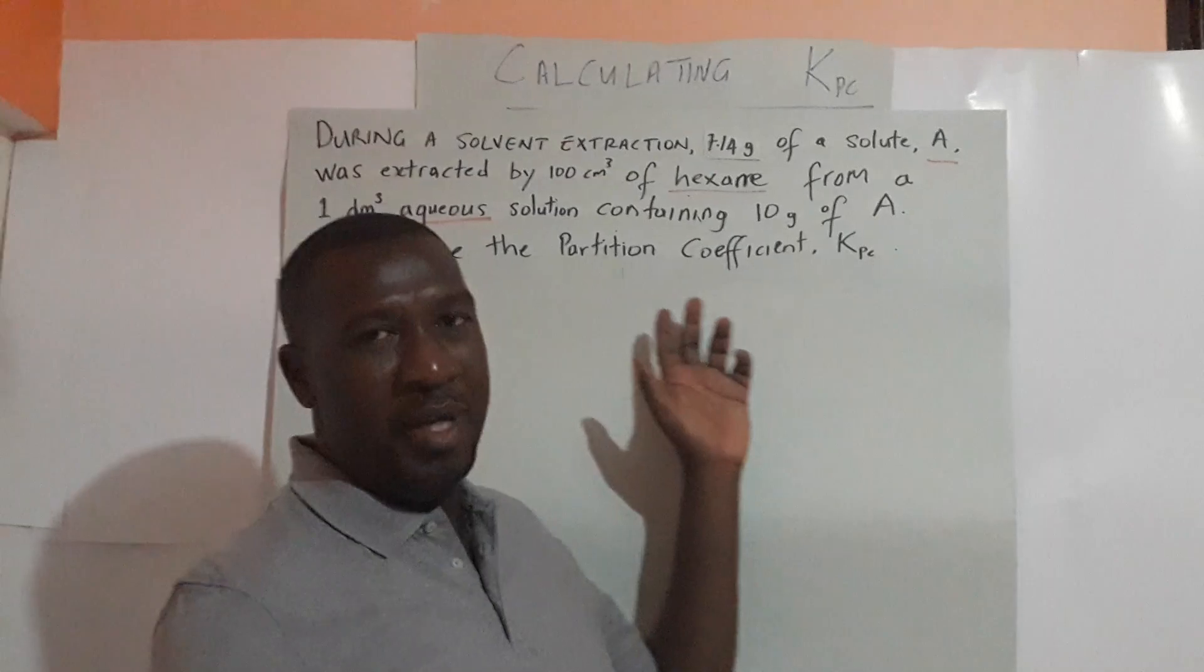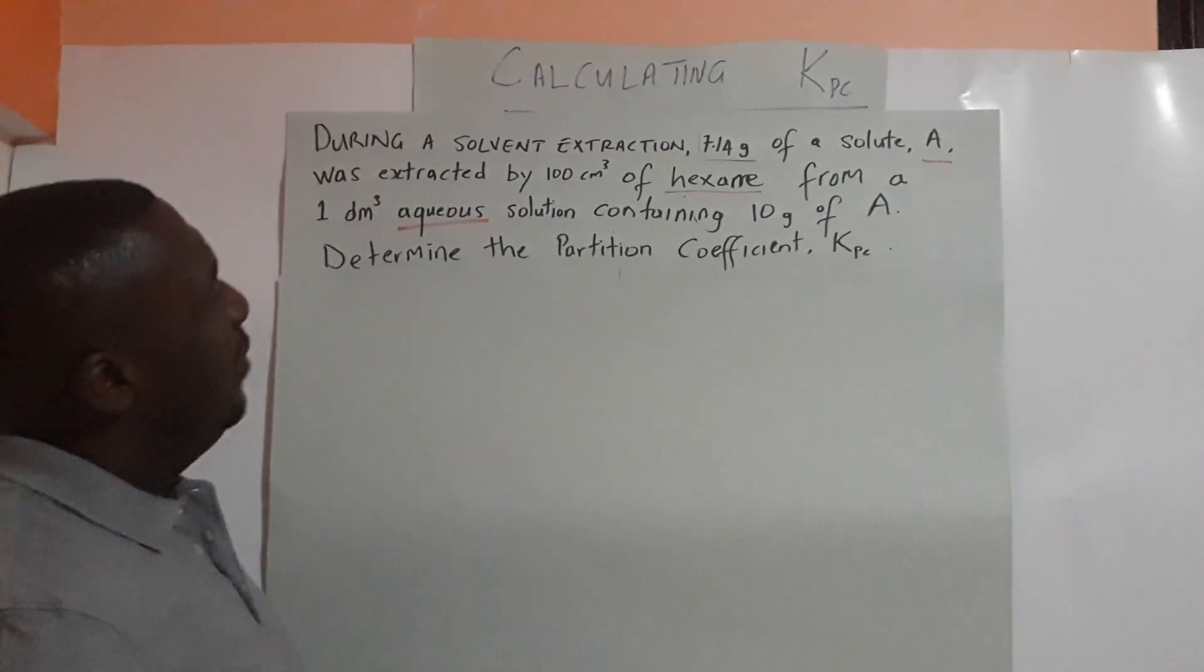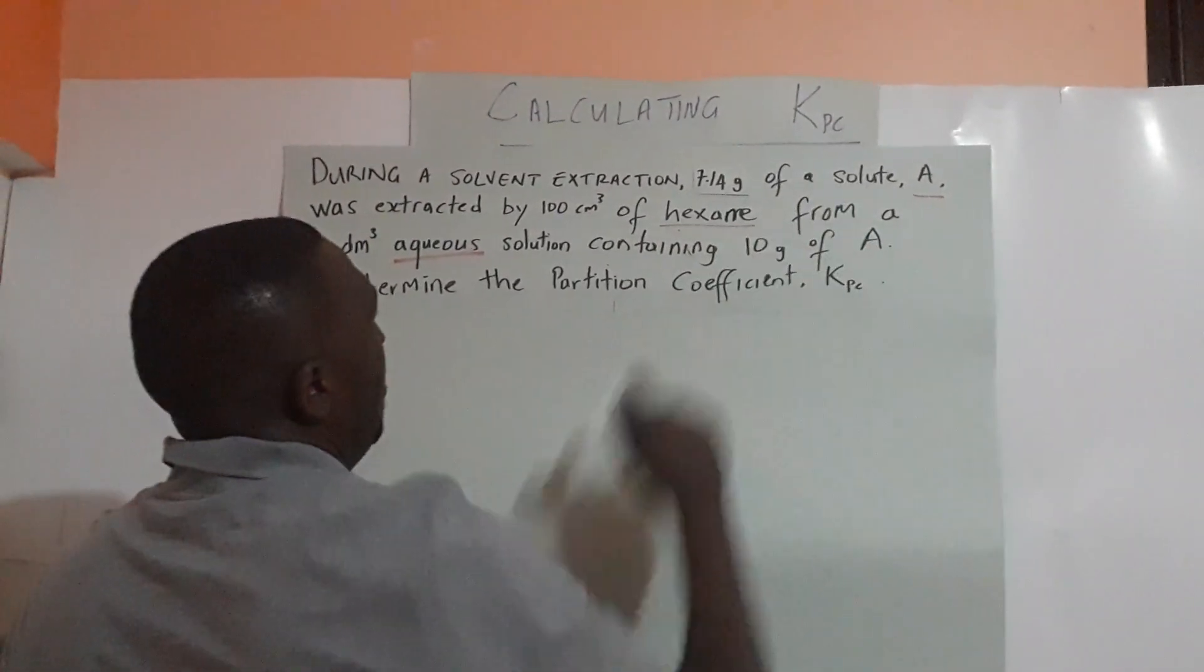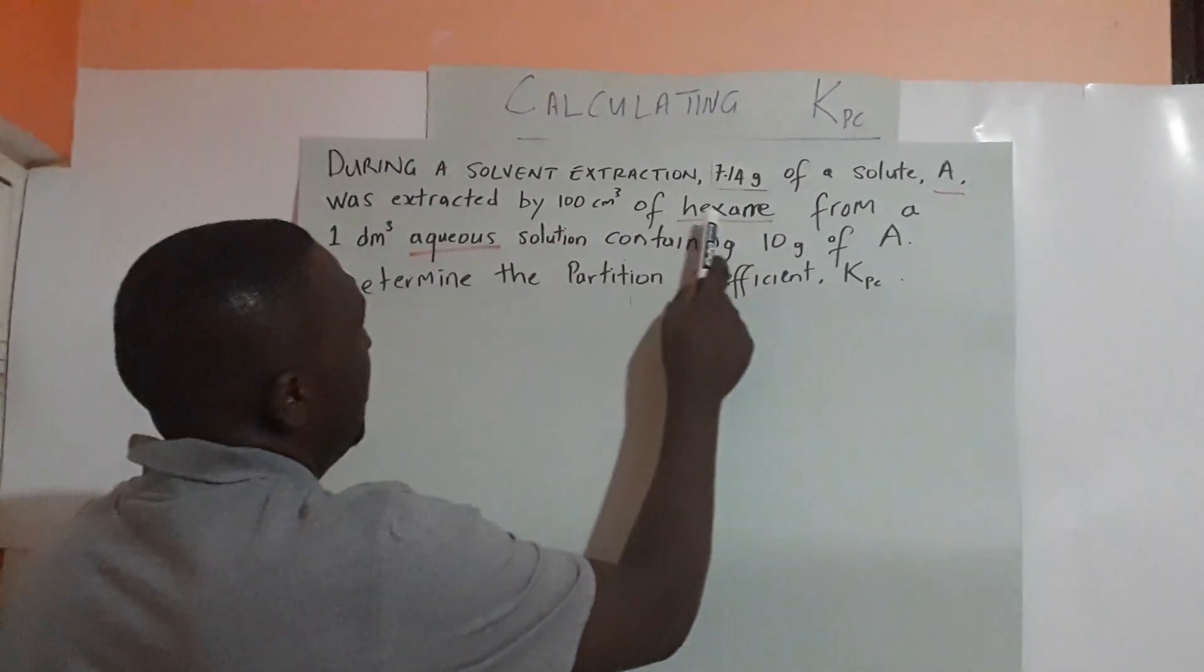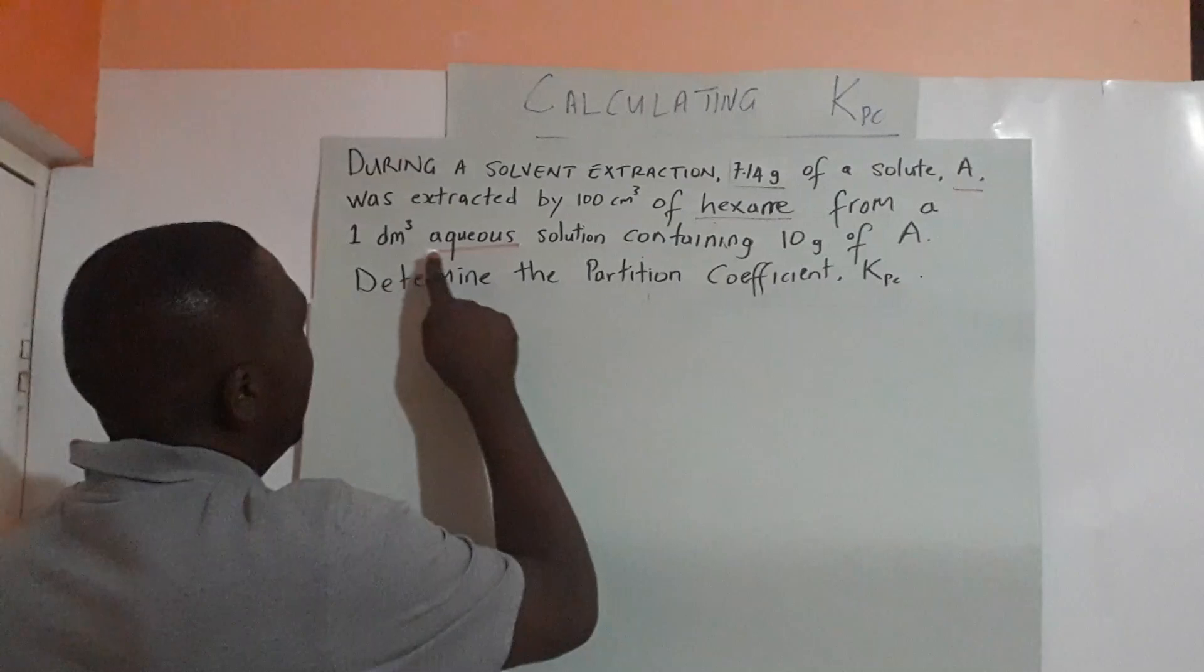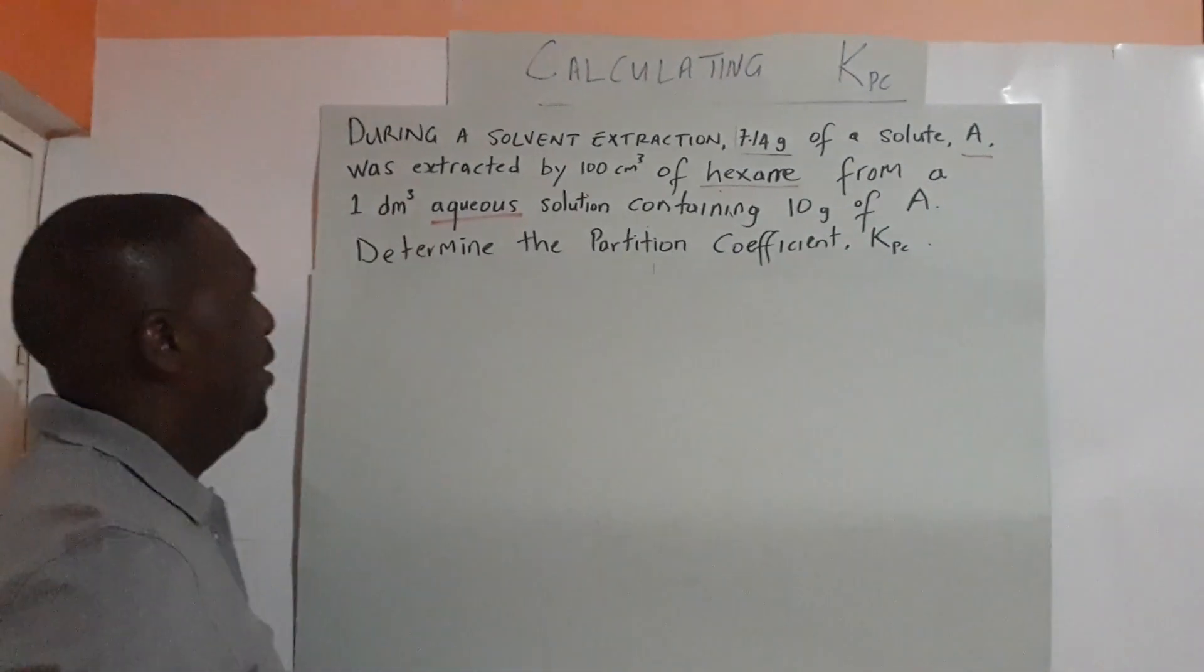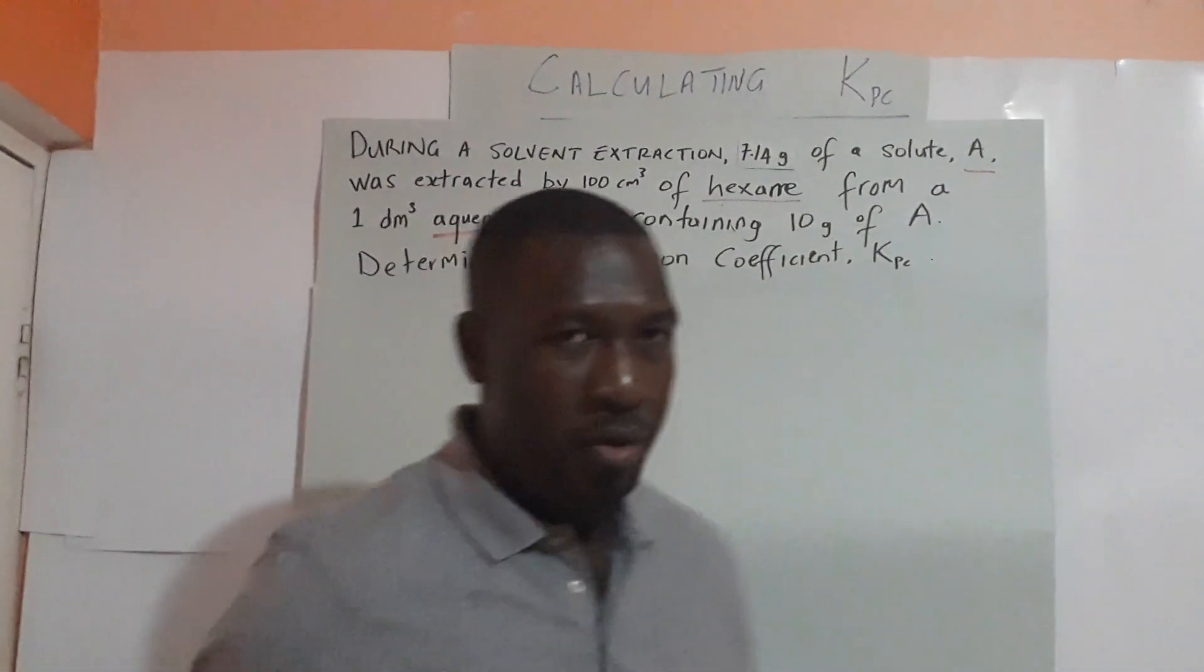Let's have a look at this problem. In this solvent extraction, 7.14 grams of solute A was extracted by 100 centimeter cube of hexane from a one decimeter cube aqueous solution containing 10 grams of solute A. We are going to determine the partition coefficient.